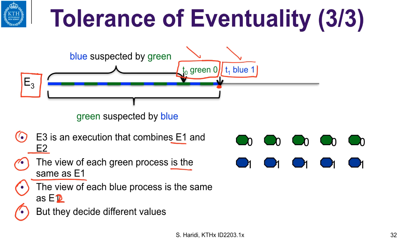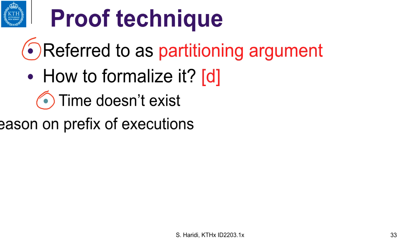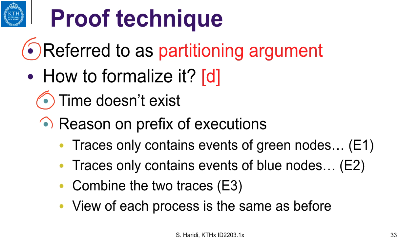No algorithm can tolerate half or more of the processes failing in the case of an eventually perfect failure detector. This proof technique is called the partitioning argument. We cannot talk about time because time does not exist in an asynchronous system, but we reason here about prefixes of execution — traces that only contain events of the green ones, traces that contain only events of E2, and then traces that combine events in E1 and E2, keeping the local order within each while mingling them together. The view of each process is the same as before, so they should get the same decision — the green ones decide 0 and the blue ones decide 1.